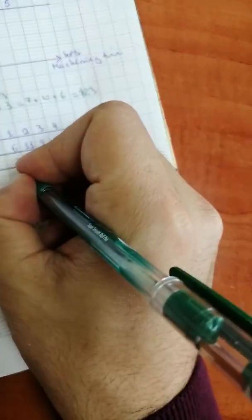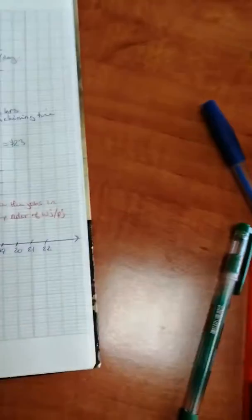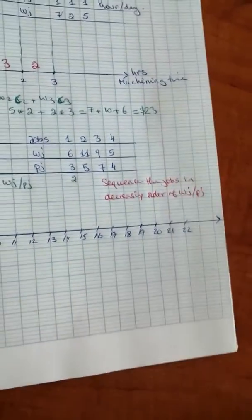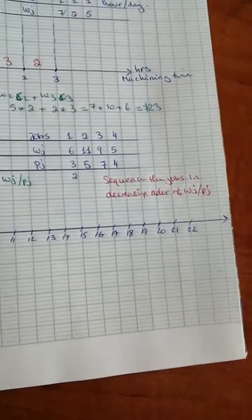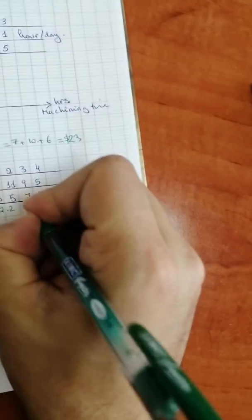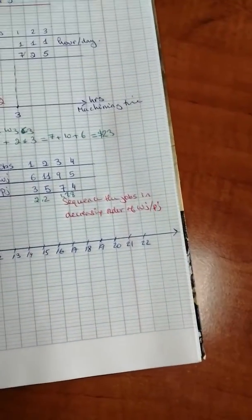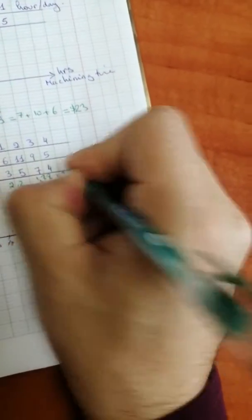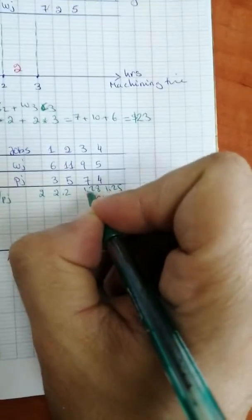To find wj divided by pj: 11 divided by 5 is 2.2, 9 divided by 7 is 1.28, and 5 divided by 4 is 1.25.